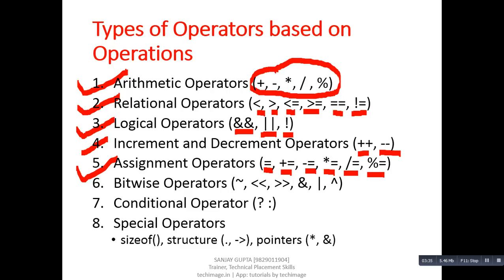The sixth type is bitwise operators. These operators can be applied on binary values. In this type, the operators are: complement, left shift, right shift, AND, OR, and XOR.